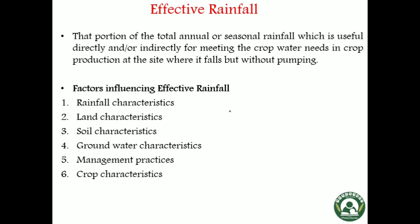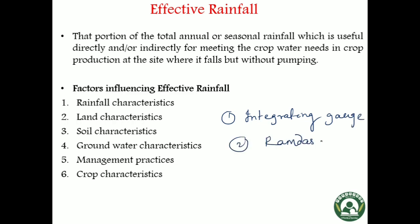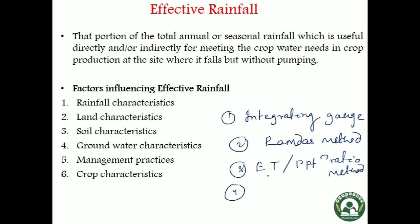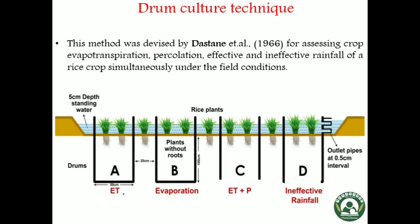Effective rainfall can be determined by various methods: the first is the integrating Gauss method, the second is the Ramdas method which is very popular, the third is the evapotranspiration and precipitation ratio method, and the fourth is the drum culture method. Today we will discuss only the drum culture technique, which is widely practiced in lowland rice culture and was first discovered by Dastane in 1966.